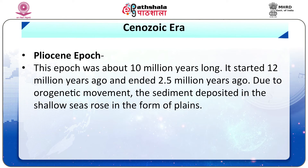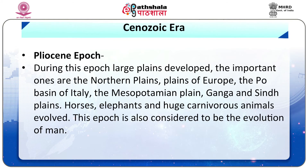The Pliocene epoch was about 10 million years long. It started 12 million years ago and ended 2.5 million years ago. Due to orogenetic movement, the sediment deposited in the shallow seas rose in the form of plains. During this epoch, large plains developed: the Northern Plains, Plains of Europe, the Po Basin of Italy, the Mesopotamian Plains, and the Ganga and Sindh Plains. Horses, elephants and huge carnivorous animals evolved. This epoch is also considered to be the time of the evolution of man.